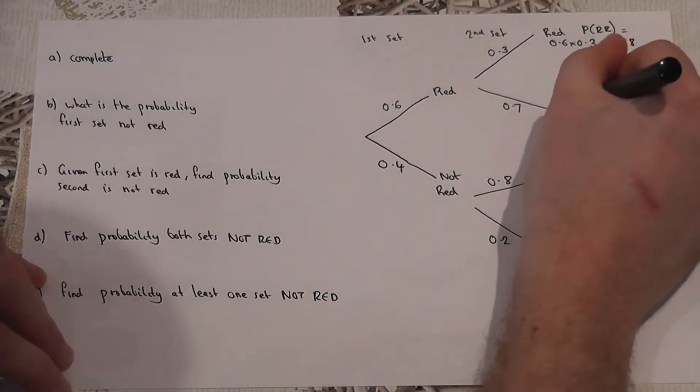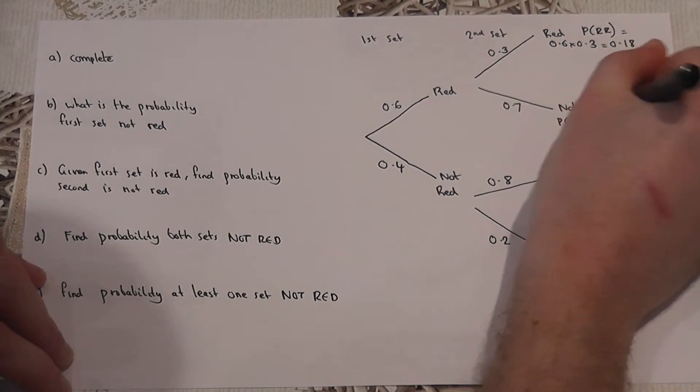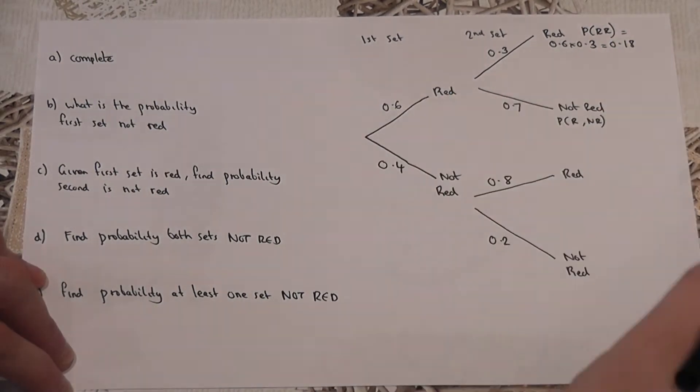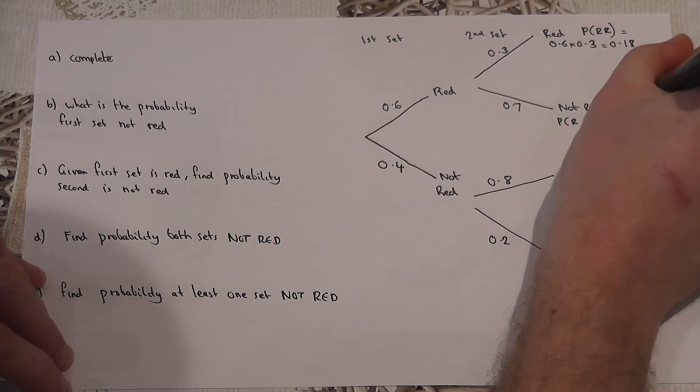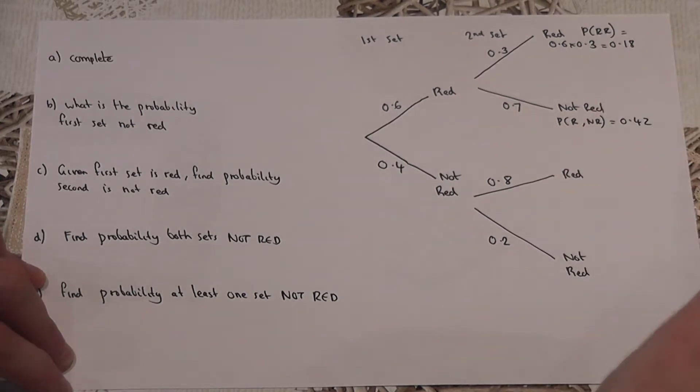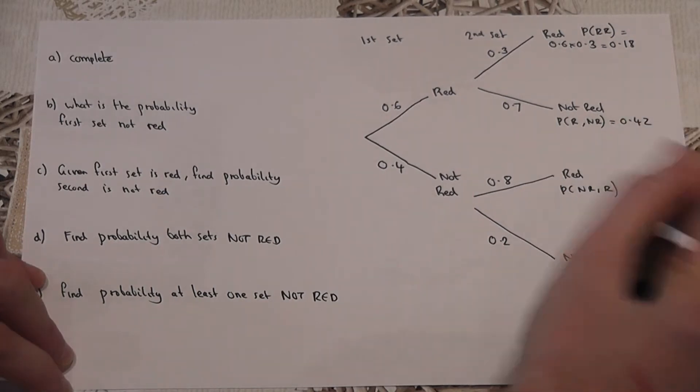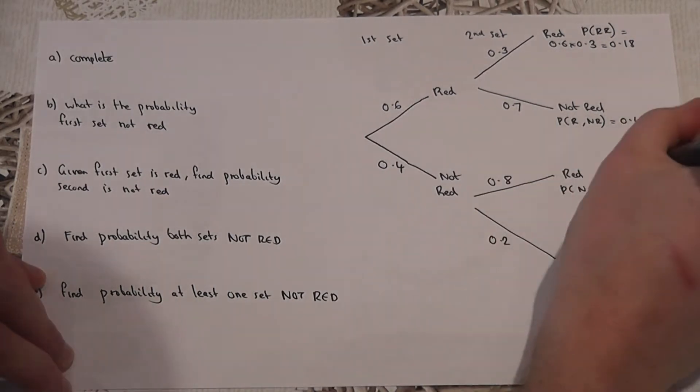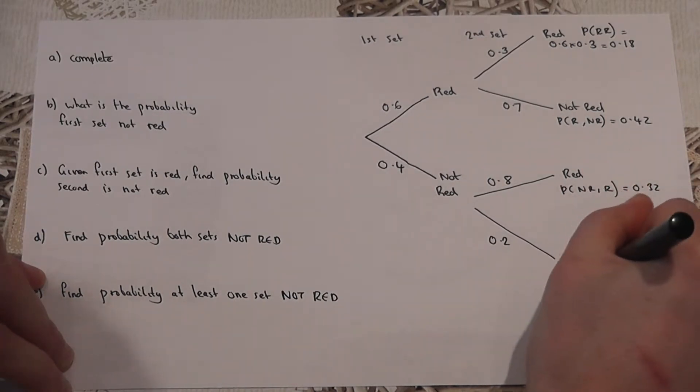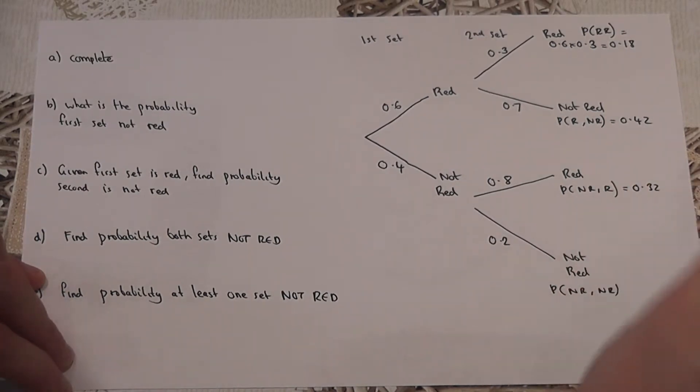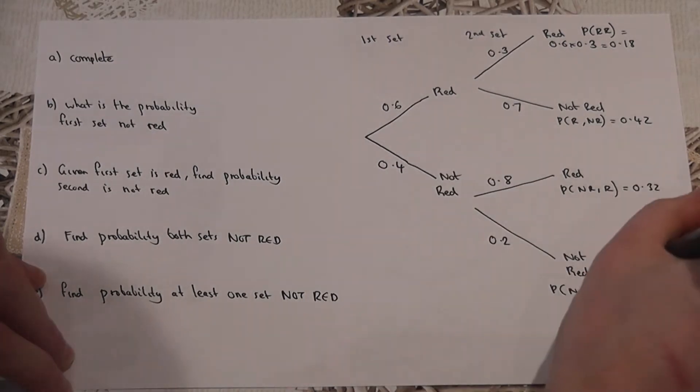The probability of red and then not red is 0.6 times 0.7, which is 0.42. The probability of not red and then red is 0.4 times 0.8, which is 0.32. And finally, the probability of not red and then not red is 0.4 times 0.2, which is 0.08.